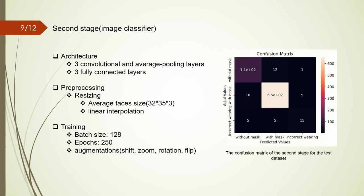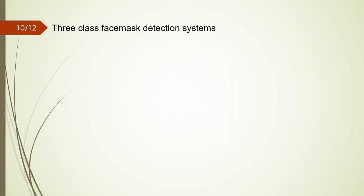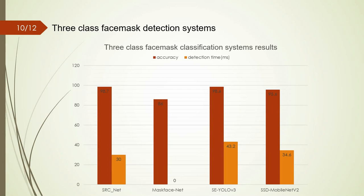Finally, the network reached 95.6% accuracy on the test dataset. The confusion matrix of the system for the test dataset is as follows. This chart compares the accuracy and speed of the best three-class face mask detection systems. The SRC net provides the best accuracy using four states. Also, the chart shows that the proposed network has established a good trade-off between speed and accuracy.